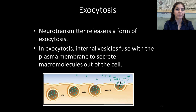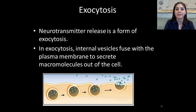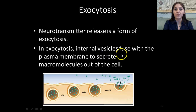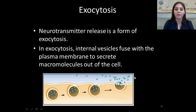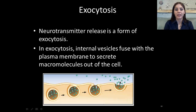Neurotransmitter release is a form of exocytosis — this should bring you back to when we covered cells. Exo meaning outside, and cyto referring to the cell. In exocytosis, an internal vesicle fuses with the plasma membrane and secretes macromolecules out of the cell. A vesicle travels, eventually binds to the plasma membrane, and releases whatever is inside it — in this case, macromolecules, or the neurotransmitters.